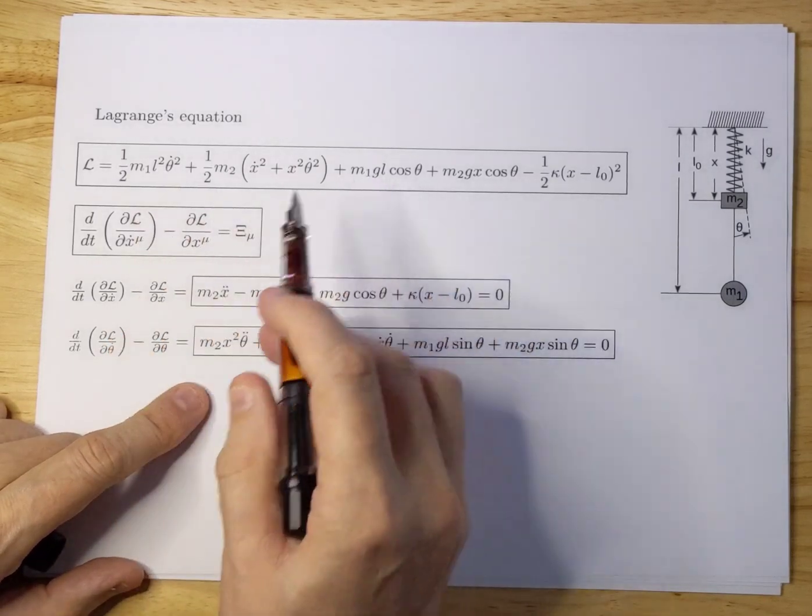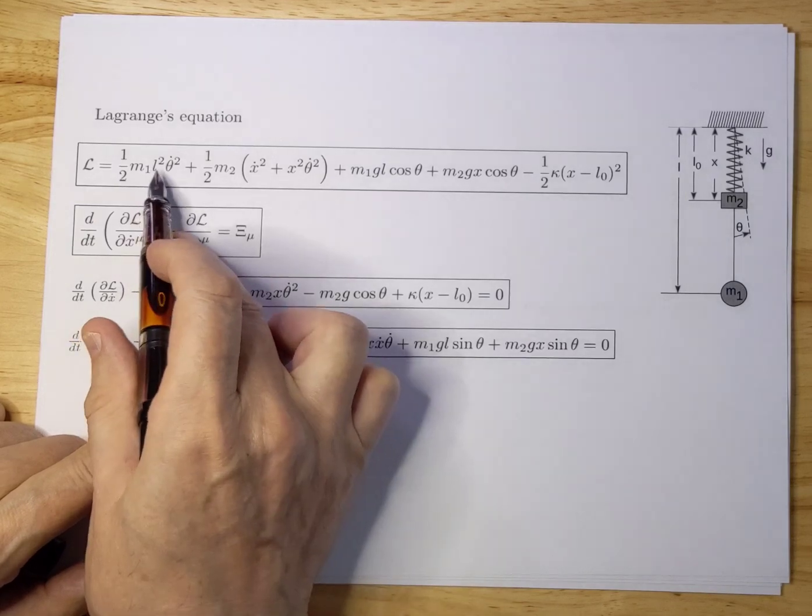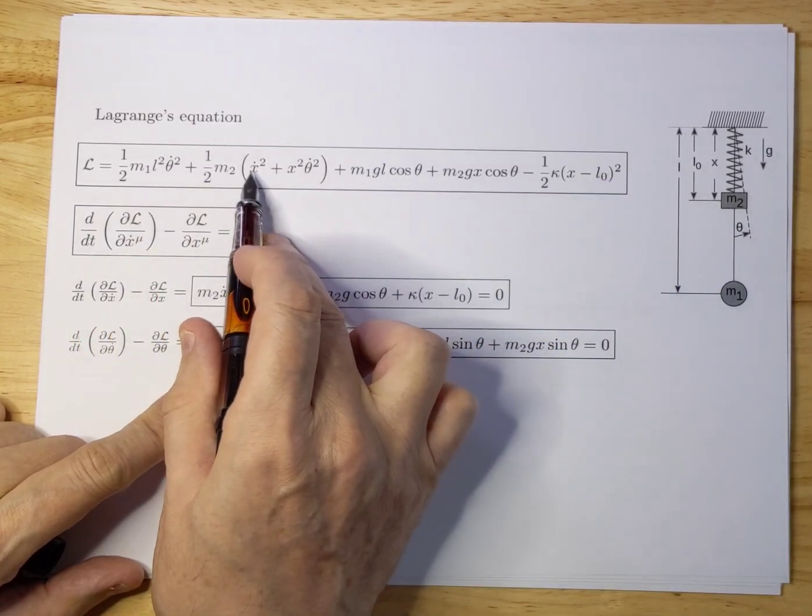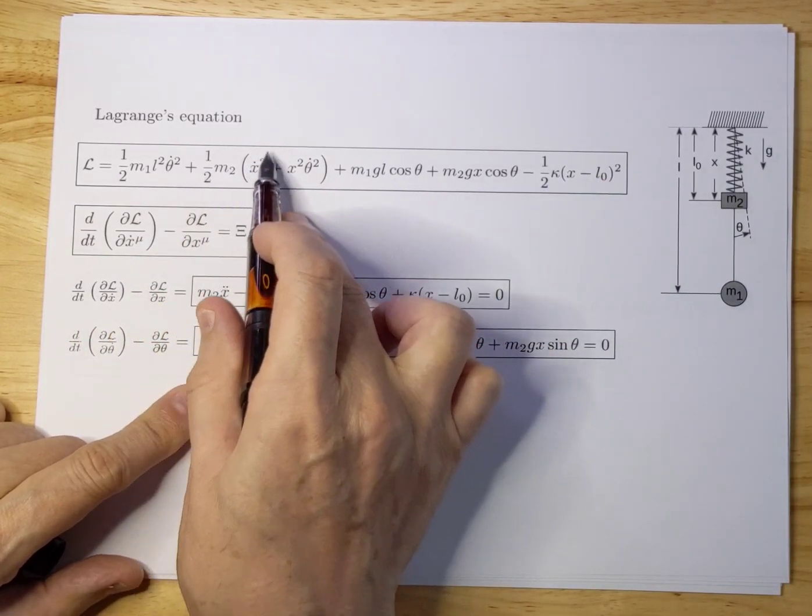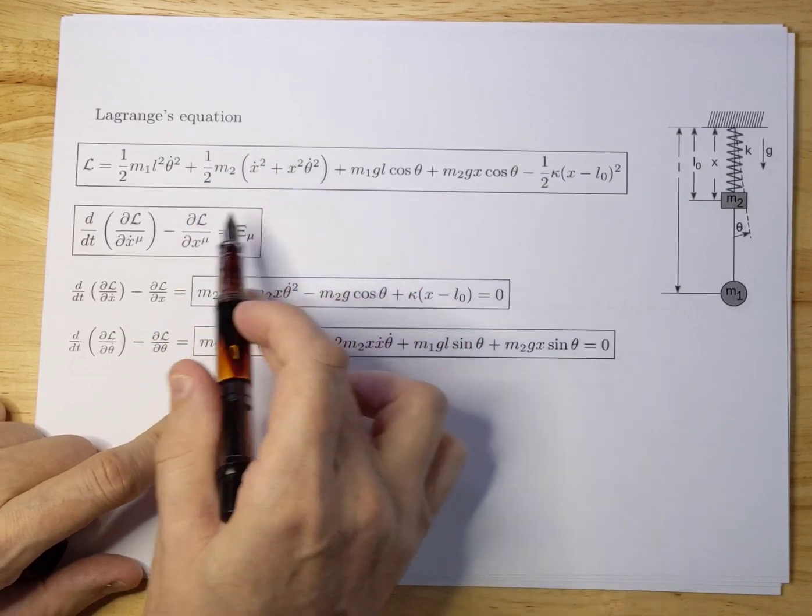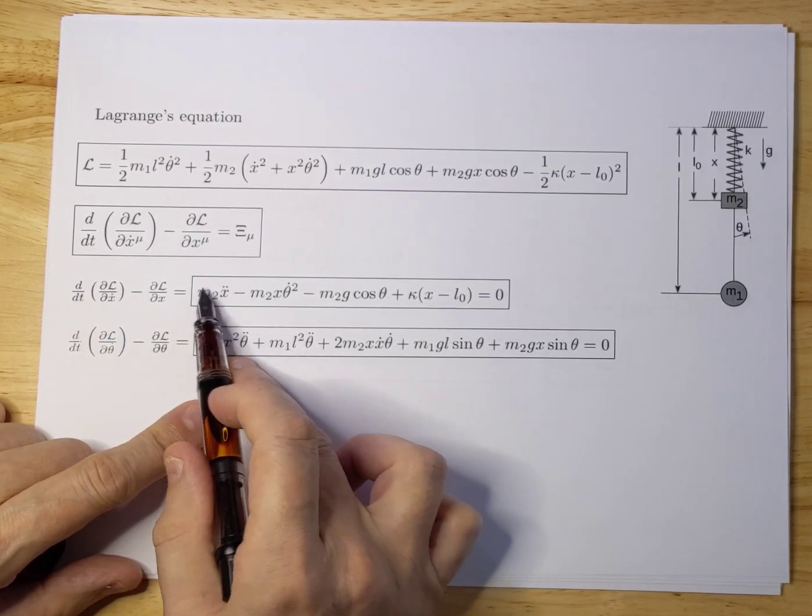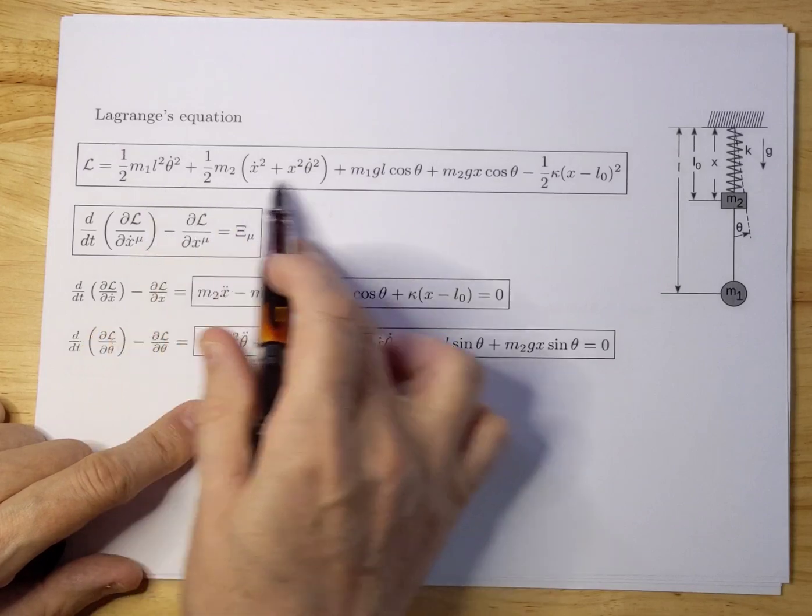Let's start with X. We differentiate the Lagrangian with respect to X dot. If you do that, there's only one X dot in here, so you differentiate this term and you get M2 X dot. Now you have to differentiate that towards t and you get M2 X double dot over here.